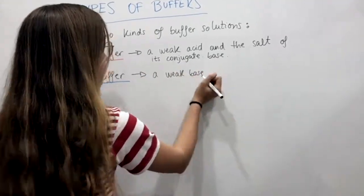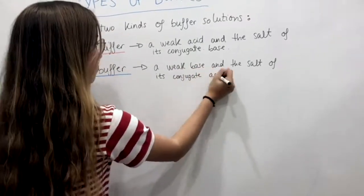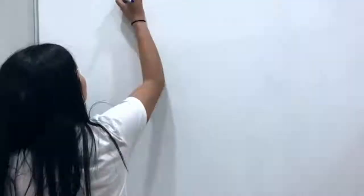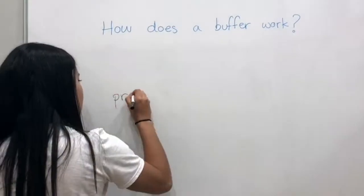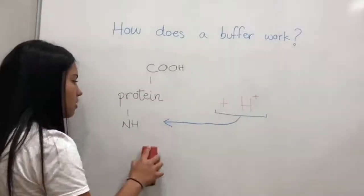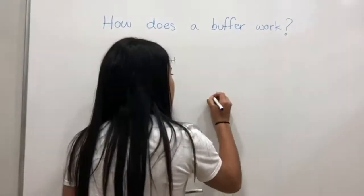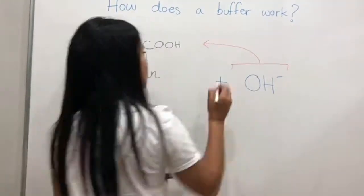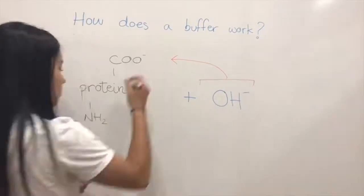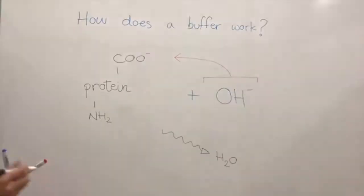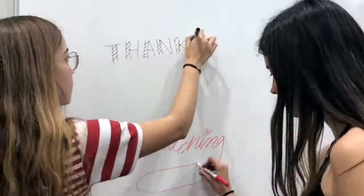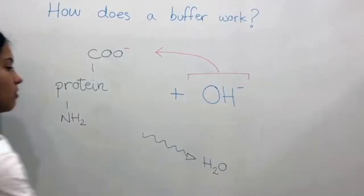The same exact thing is what a protein does when it functions as a buffer. There is a protein and both of its ends are represented: the carboxylic end and the amino end. In an acidic medium, protons are transferred to the amino end, so it becomes protonated and acts as a weak acid to regulate the mixture. In a basic medium, the OH- takes a proton from the carboxylic end to make a molecule of water. The carboxylic end then has a negative charge, making it act as a weak base, so the mixture becomes a little less basic.